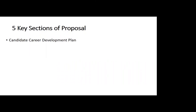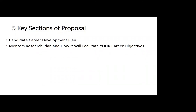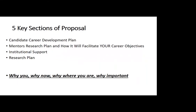The five scoring areas are: first, the candidate and the career development plan; second, the mentor's research plan and how it will facilitate your career — this is absolutely critical; third, the institutional support; fourth, the research plan; and fifth, the area where we want you to show us why you, why now, why where you are, and why is the research you're proposing important. This is exactly what your grant needs to scream.